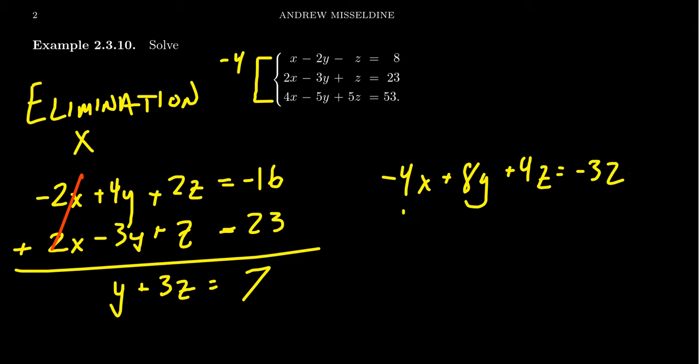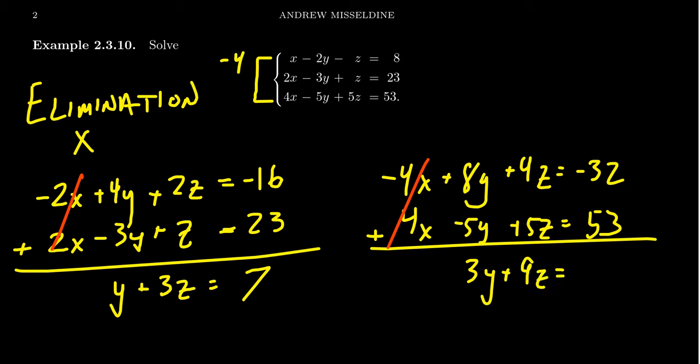Now we're going to just take the third equation as well. Four x minus five y plus five z is equal to 53 and we want to add these together. Because of the adjustments of the coefficients the x's are going to cancel out yet again. We're going to get an eight y minus a five y which is a three y. We're going to get a four z plus a five z which is a nine z and then 53 take away 32 which gives us a 21.